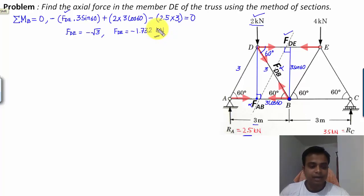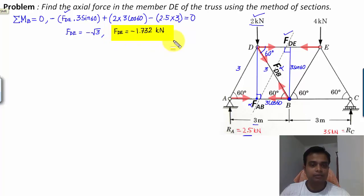Solving this equation, F_DE works out as negative root 3, which equals minus 1.732 kN. That is the value of F_DE — and this is our answer.